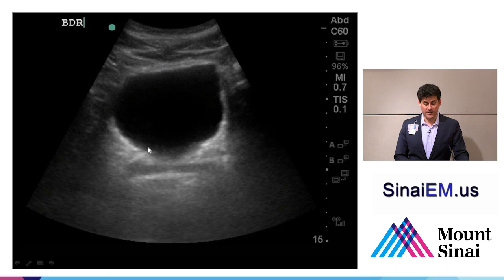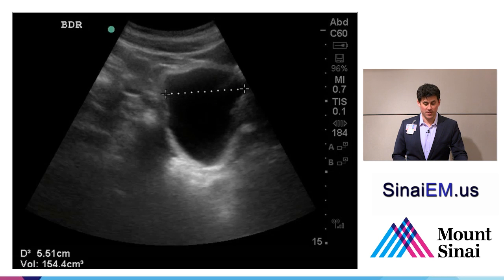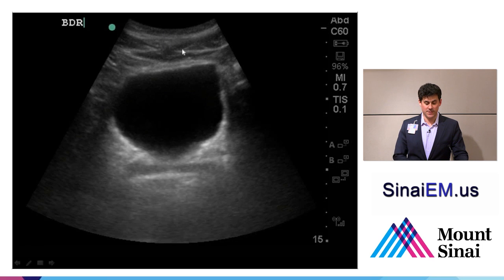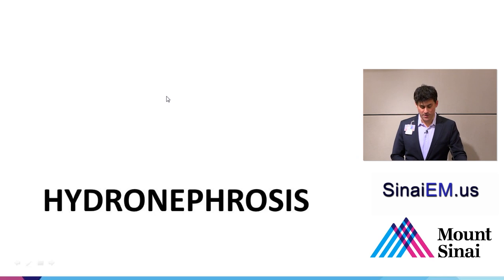We see anechoic fluid throughout the entire bladder, with the anterior wall and posterior wall visible. What you see below depends on your angle — further inferior you'll see the rectum or sigmoid colon, and more towards the patient's head you'll see the prostate in a man or the vaginal cuff or uterus in a female. In the transverse view we have anterior-to-posterior and right-to-left dimensions. Turning to sagittal orientation gives us anterior-to-posterior and inferior-to-superior dimensions, allowing us to measure bladder volume.